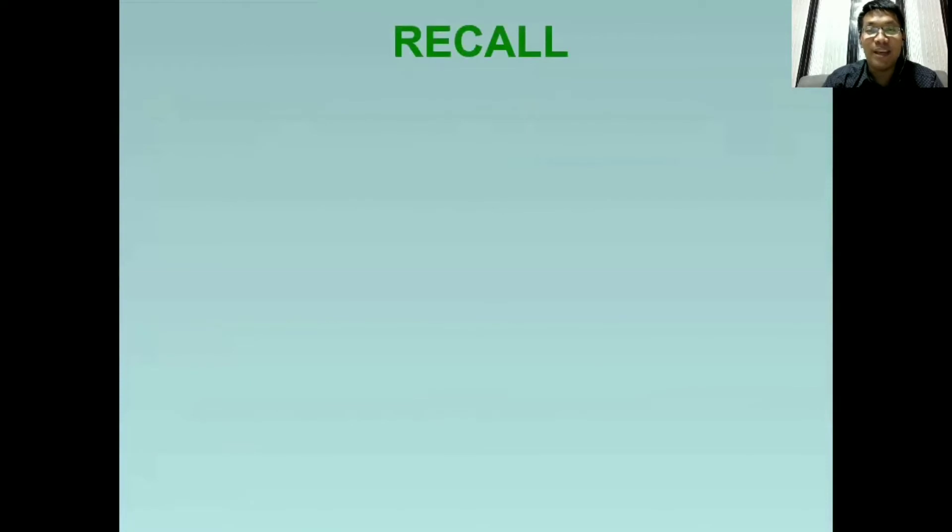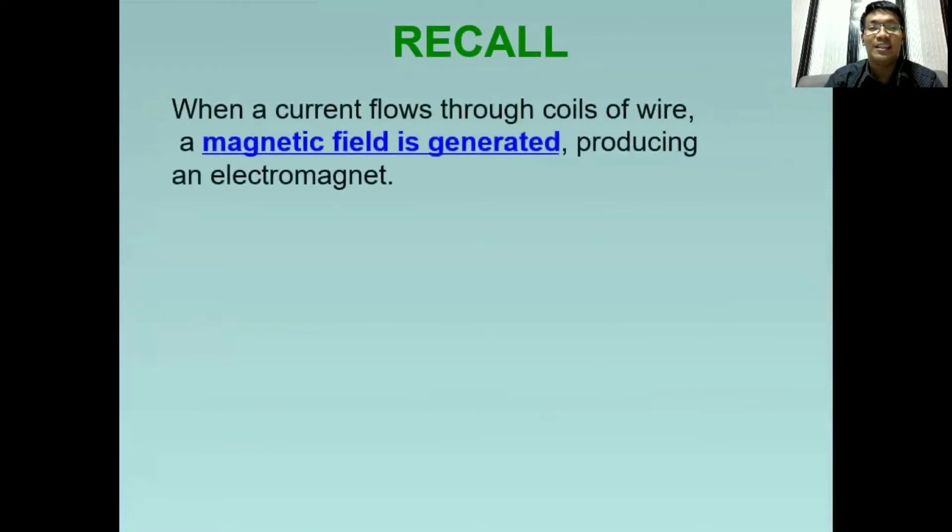Let's have a short recall. When a current flows through coils of wire, a magnetic field is generated, producing an electromagnet. Ibig sabihin, kapag dumadaloy ang kuryente sa isang wire or sa isang konduktor, tatandaan natin na nakakaproduce din ito ng magnetic field or ng magnetism.